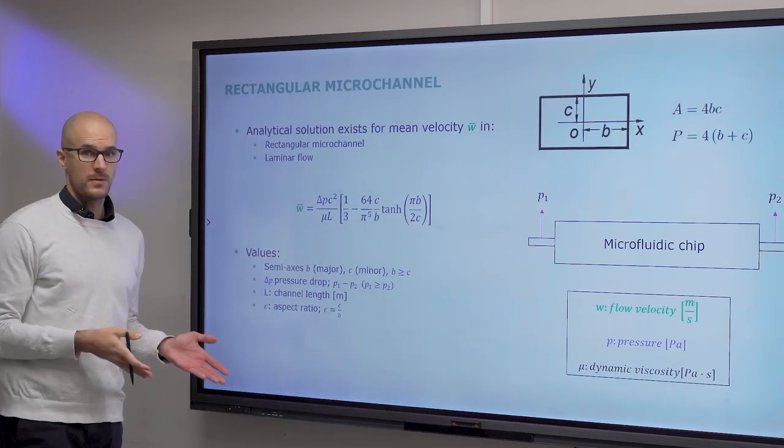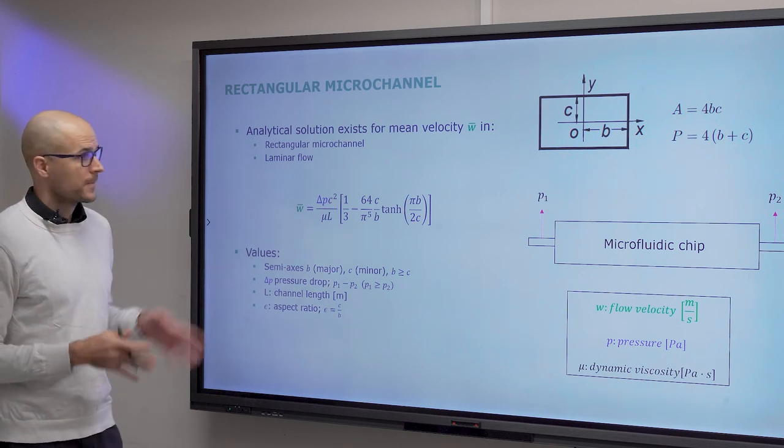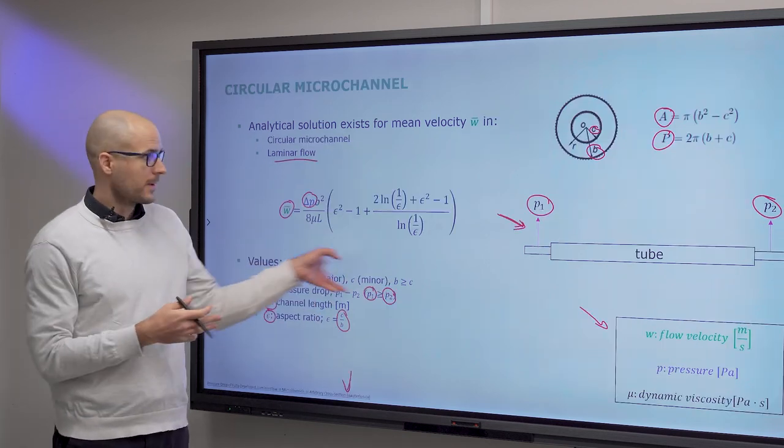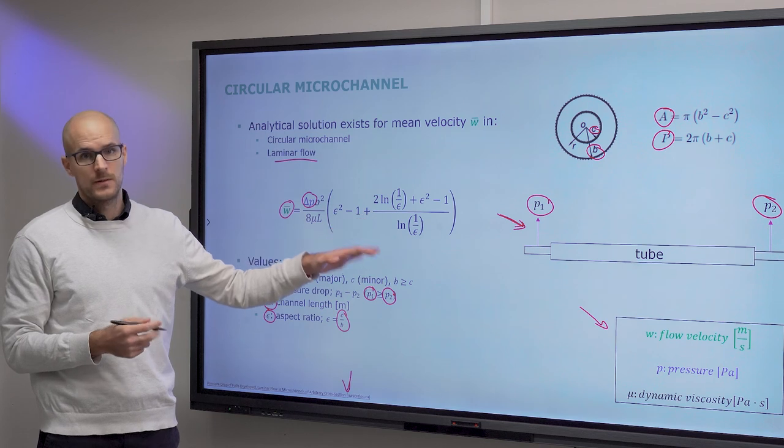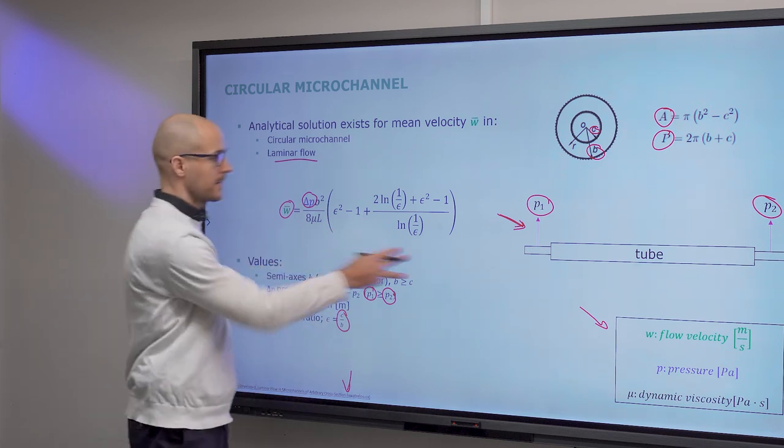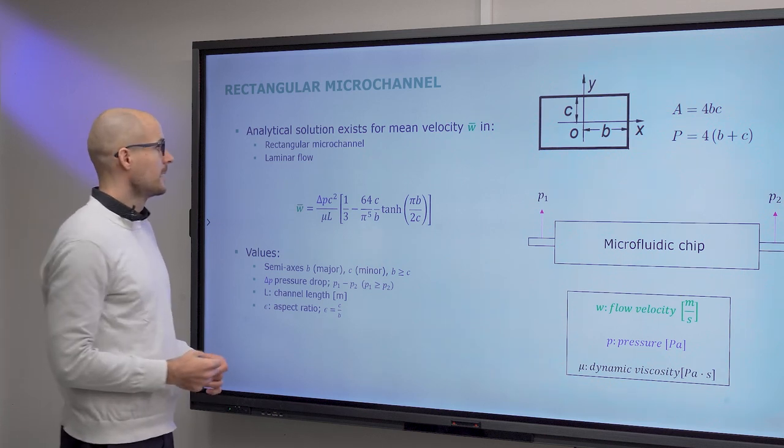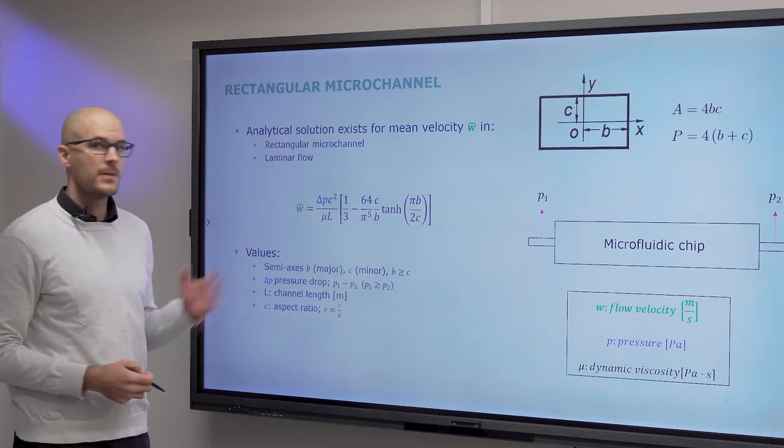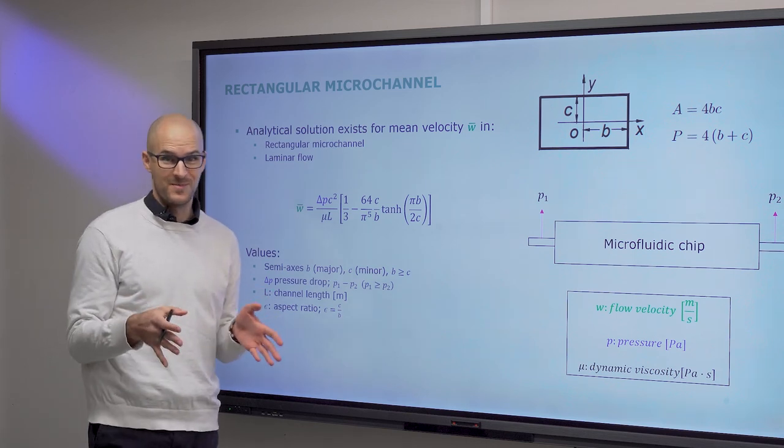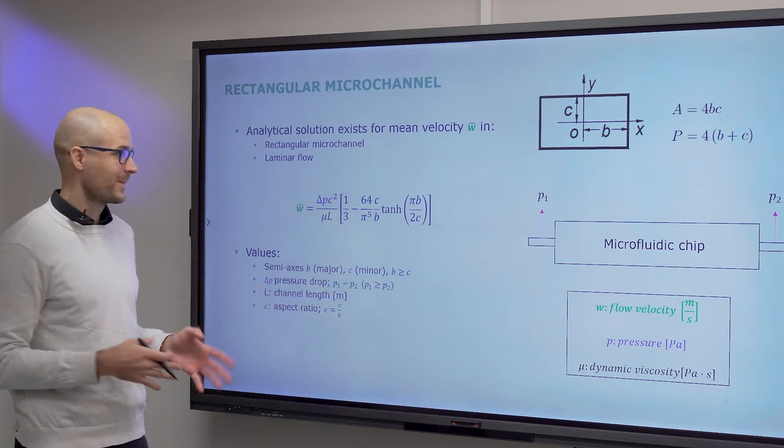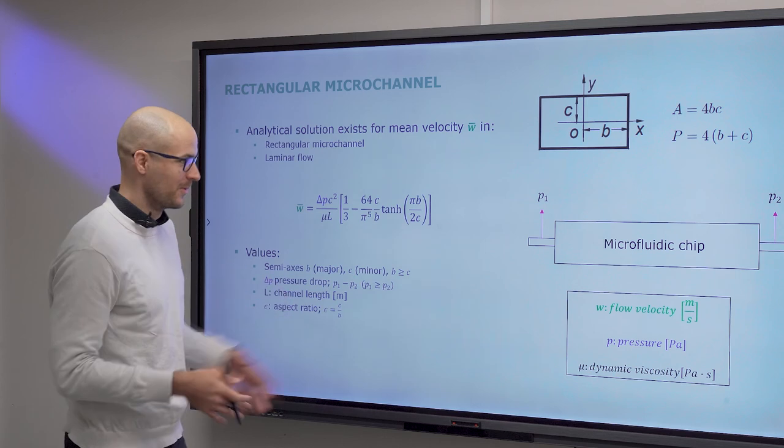Rectangular microchannels. This is typically what you will work with. This circular cross-section calculation is for tubing. So this one is for your regular microchannels. And again, the hypothesis is the same. Obviously this has been proven experimentally. That's why I'm telling you all this. So it's not just a hypothesis. It's a proven theory.